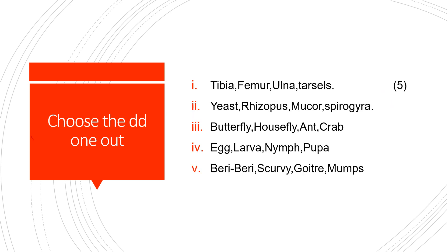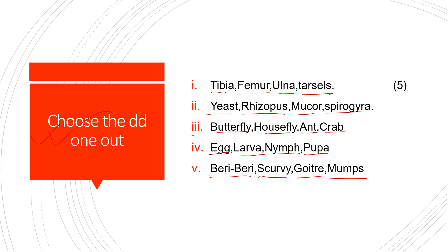Next is 'Choose the Odd One Out.' The sets are: (1) Tibia, femur, ulna, tarsals; (2) Yeast, Rhizopus, mucus, Spirogyra; (3) Butterfly, housefly, ant, crab; (4) Egg, larva, nymph, pupa; (5) Beriberi, scurvy, goiter, mumps.